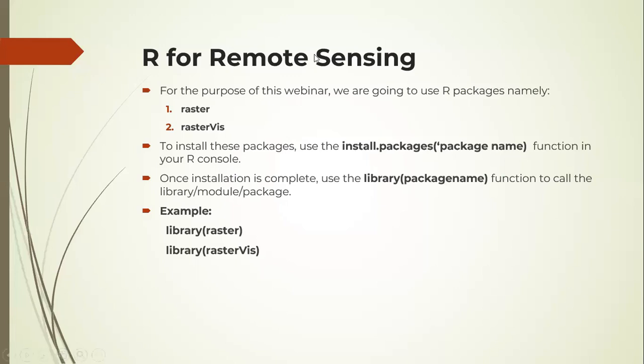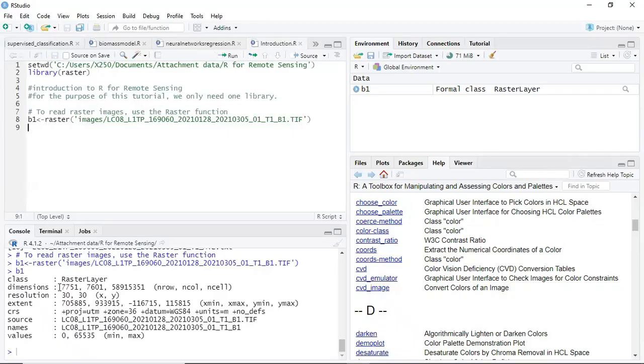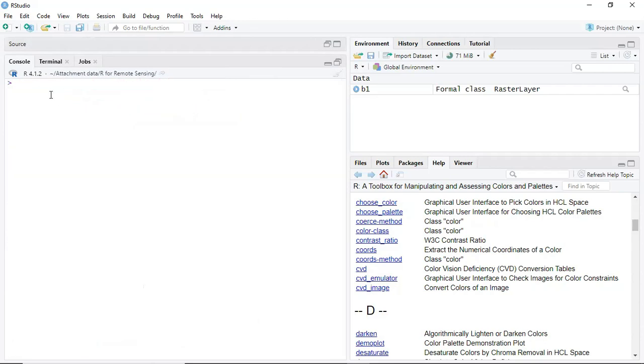For those that do not know how to install packages in R, if you open R Studio, it will look like this. You will get a view. This is the console. These are your environment variables. And then here you can look at plots, packages, files, and sometimes view maps or the loaded diagrams.